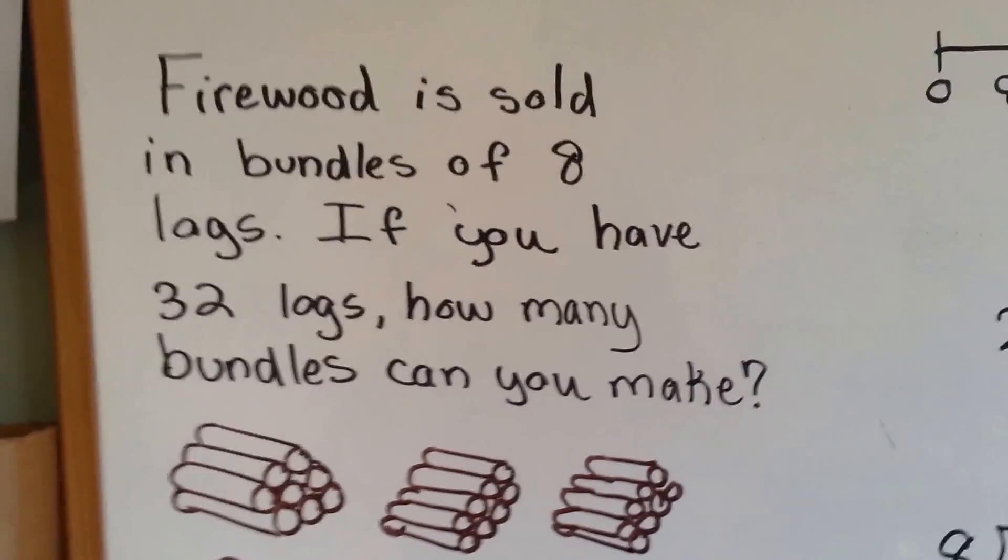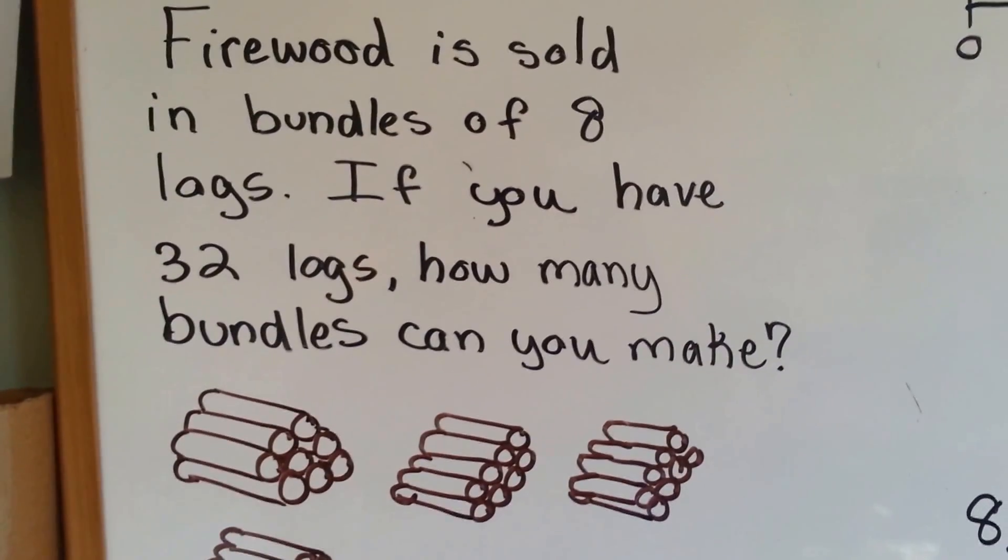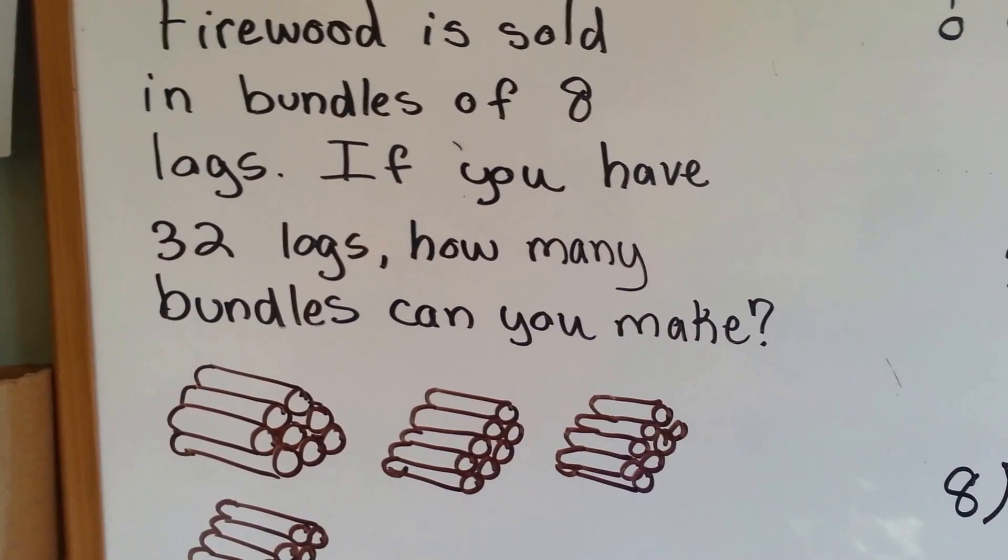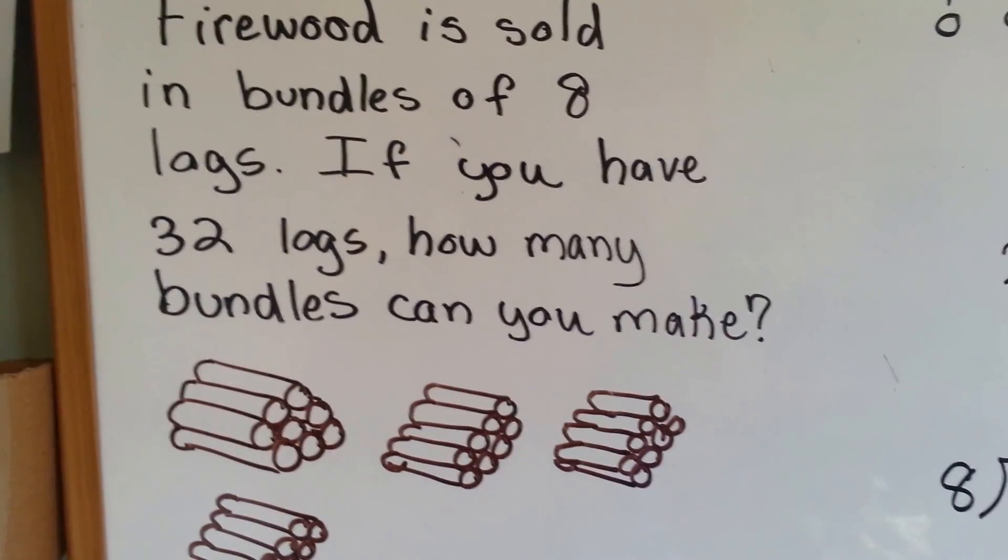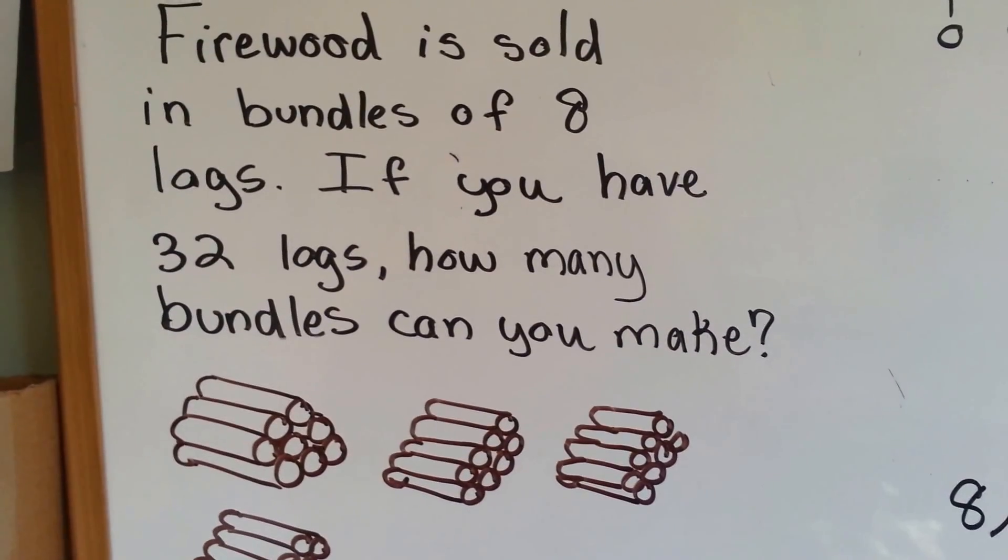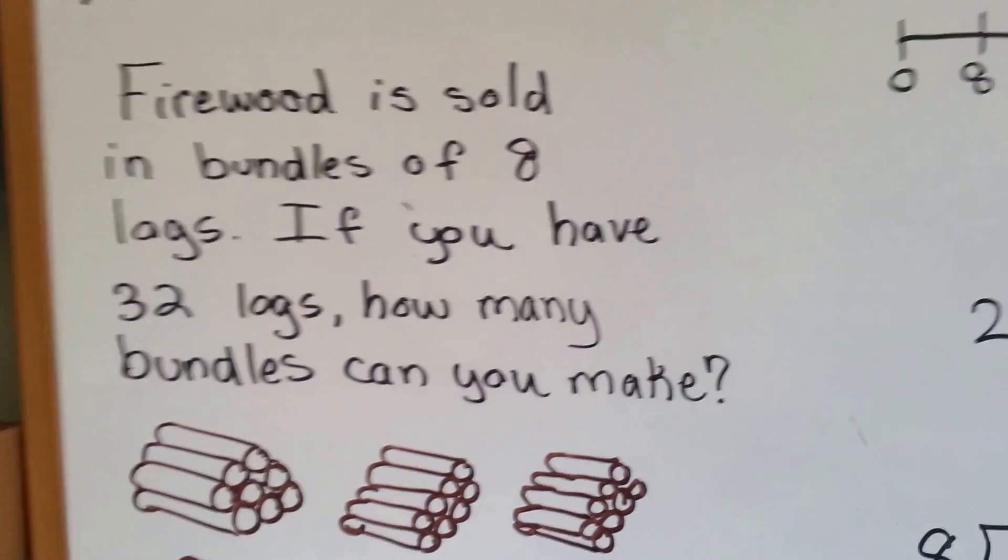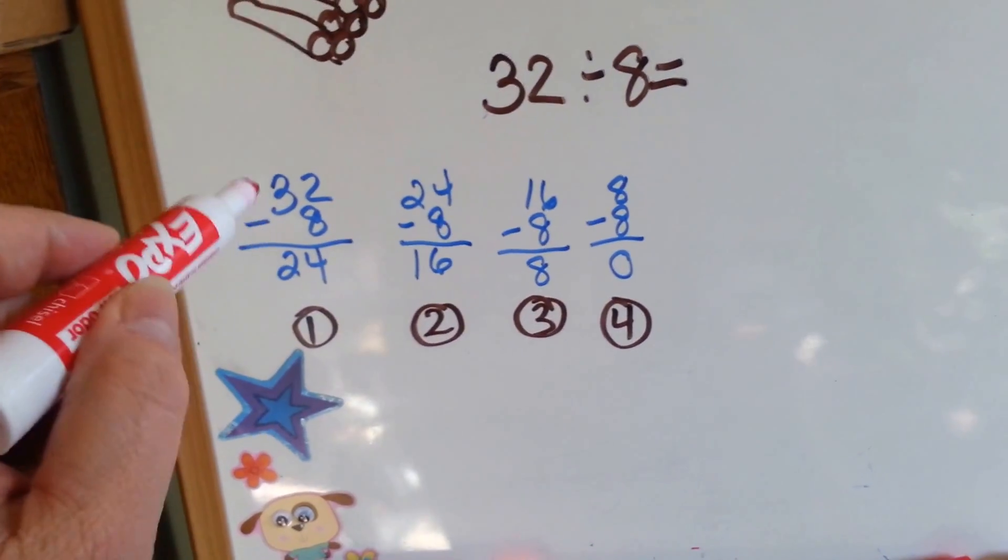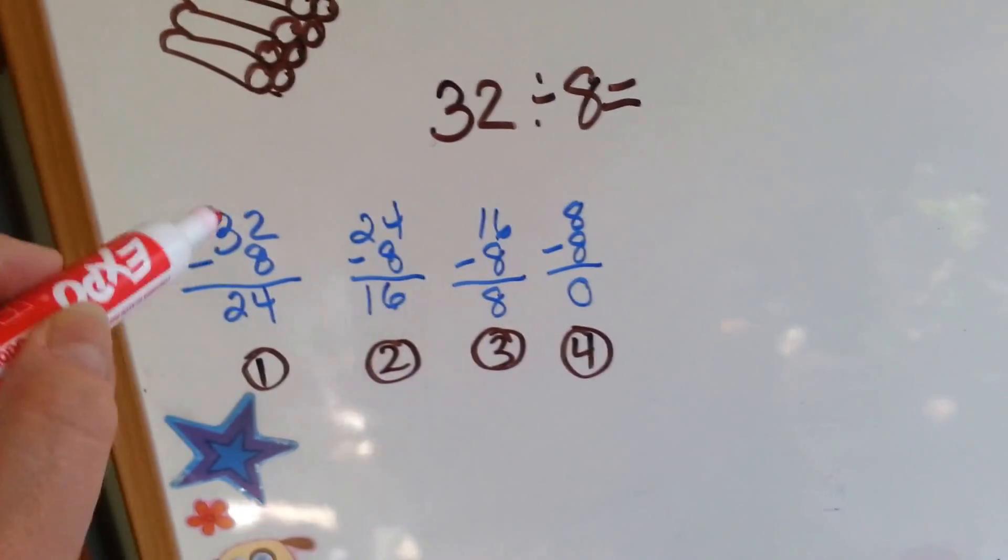So let's look at what we've got here. We've got a word problem. Firewood is sold in bundles of 8 logs. If you have 32 logs, how many bundles can you make? What we're going to do is we're going to use subtraction to find the answer.